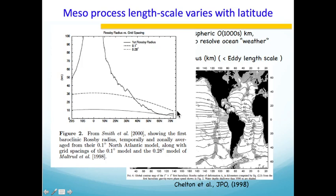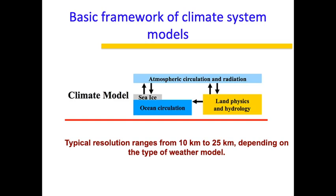Based on this, typically the global models have resolution ranging from 10 to 25 kilometers, depending on the type of weather model. A climate model has the atmospheric part, ocean part, and land part, all feeding to each other — ocean talks to atmosphere, atmosphere talks to land, and land again talks to ocean. So all these models are able to resolve mesoscale processes and provide the physics of these processes, hence the pattern of weather systems and rainfall.